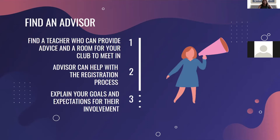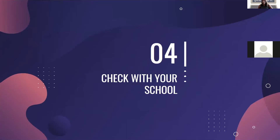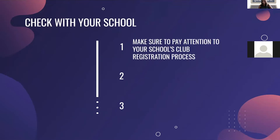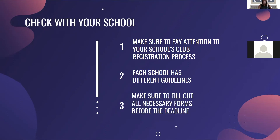Step four is to check with your school. Many schools have a registration process for clubs — you can't just say you're starting a club and expect the school to go along with it. Each school has different registration processes, so pay close attention to them. There are deadlines for forms like club constitutions and all that, so make sure you're really on task and follow those deadlines closely.